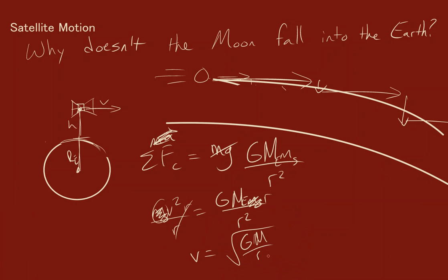But in this case, remember r would be the radius of the earth plus the altitude we want the satellite at. And there we go, that's pretty much how it works.